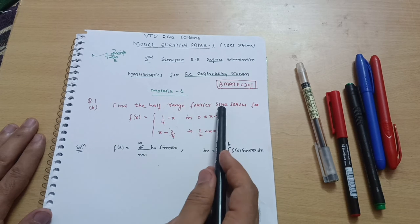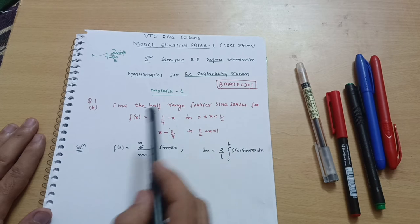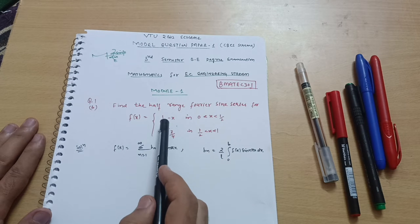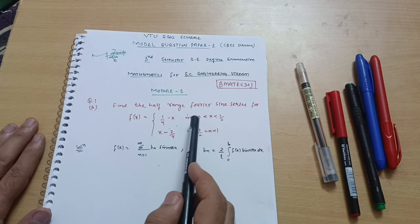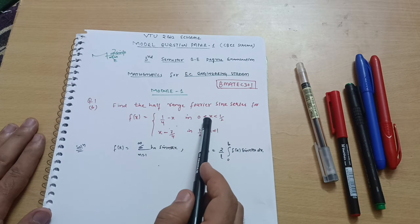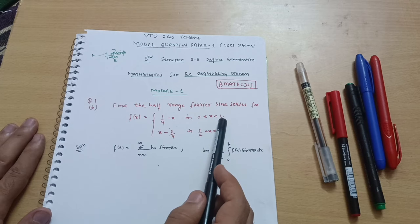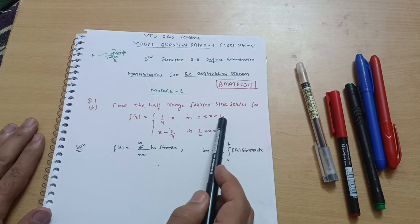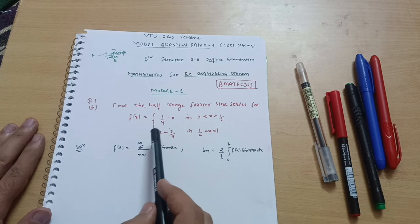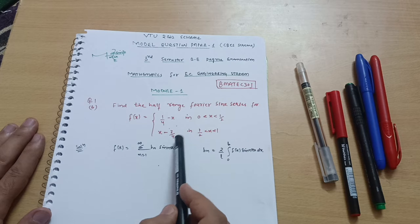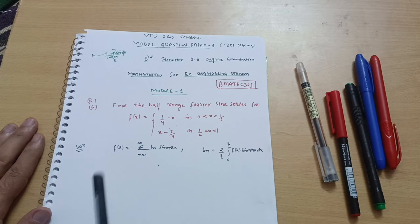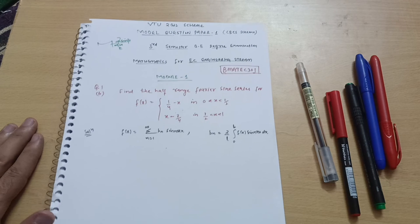Find the half range Fourier sine series for f(x), where f(x) = 1/4 - x for 0 < x < 1/2, and f(x) = x - 3/4 for 1/2 < x < 1. This is the question.